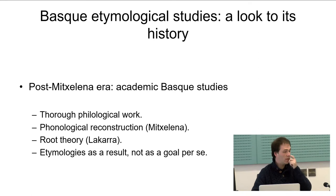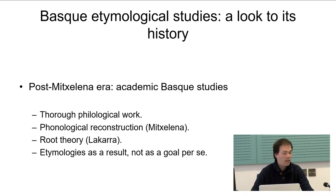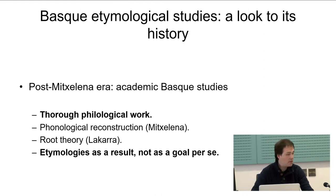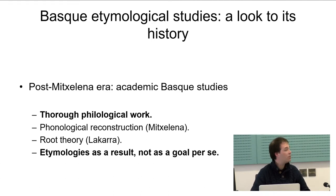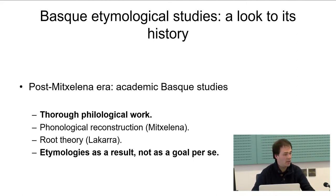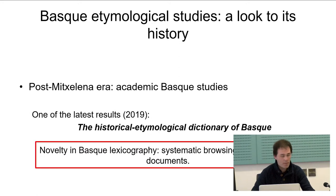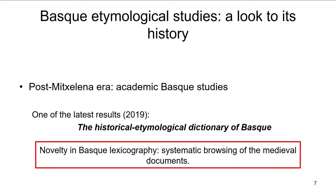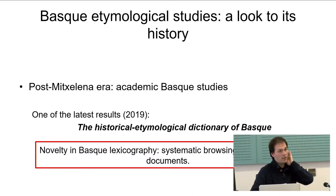Instead, Michelena and later the scholars around him applied themselves to more methodologically standard tasks. Michelena would claim the importance of philological work as a basis for any kind of diachronic reconstruction, and in this view etymologies happen to be a natural outcome of the philological and linguistic work — not an outcome per se. One of the latest results of academic Basque studies is the publication of the historical etymological dictionary of Basque, which is about to be published in a month or two.